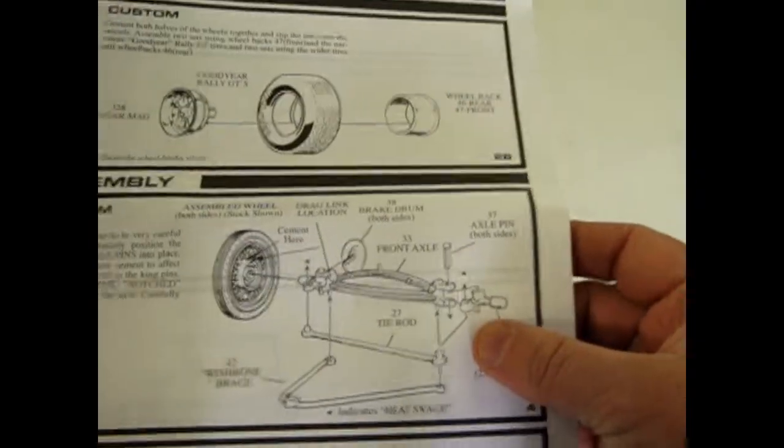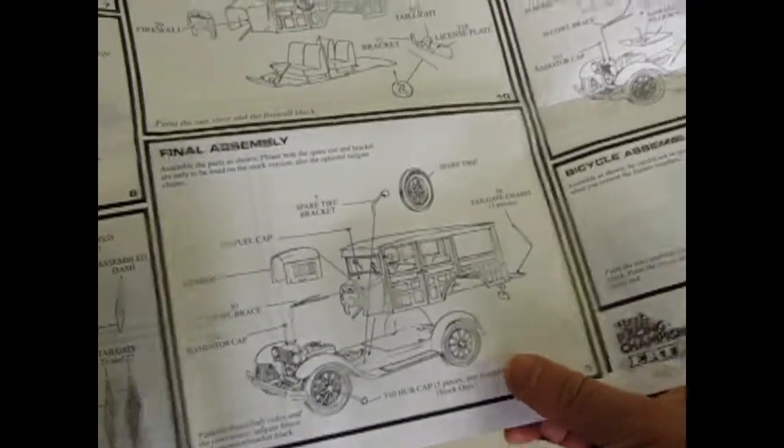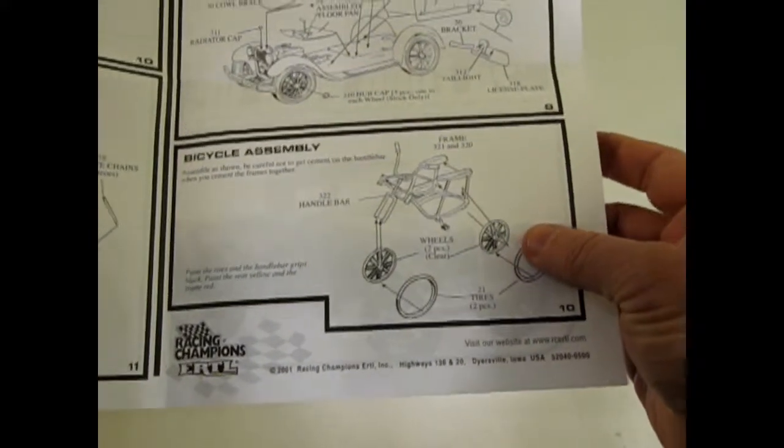This kit also has posable front wheels as well as wheels that go round and round. You can build it as a hot rod. You have your choice of pickup or the Woody. It also comes with this 1970s style bicycle, the old banana bike. Now let's actually look at the parts.